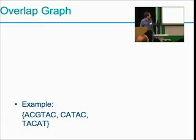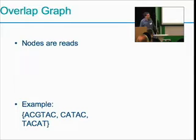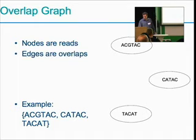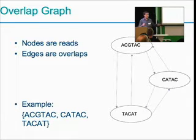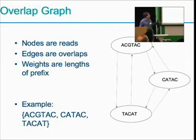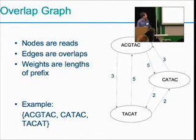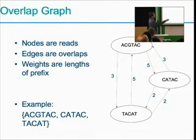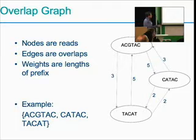In an overlap graph, the nodes are the reads. The edges are the overlaps — all reads overlap with all other reads. But the weights or distances are the lengths of the prefix: how far you have to go before you get an overlap. For example, going from ACGTAC to TACAT, there are three letters at the beginning (ACG), so that's the weight on that edge. If TACAT goes to CATAC, you have to go two letters, and so on.